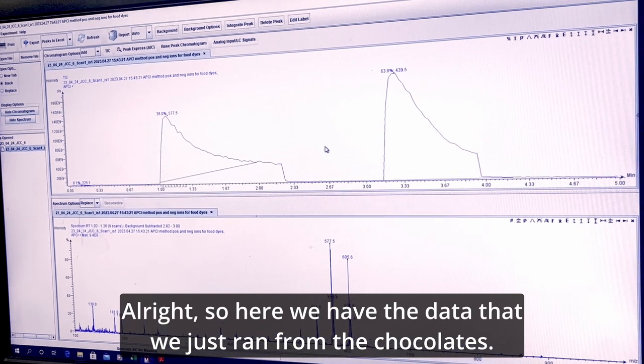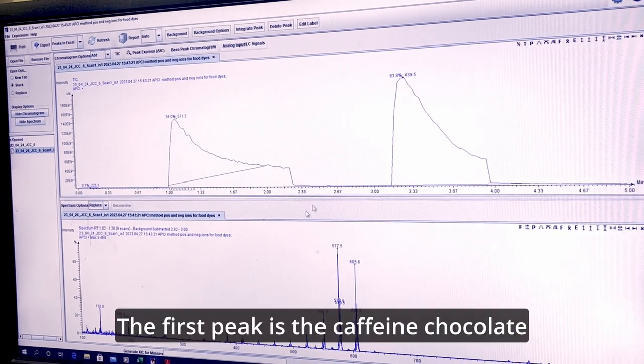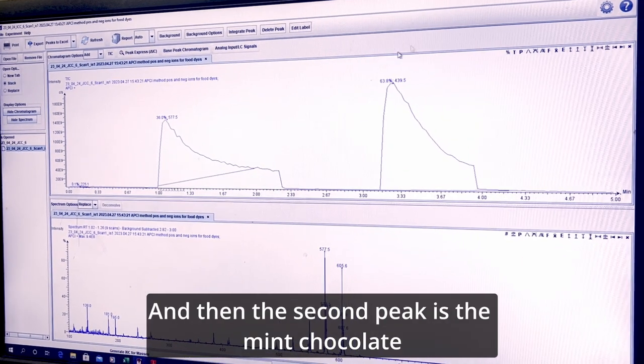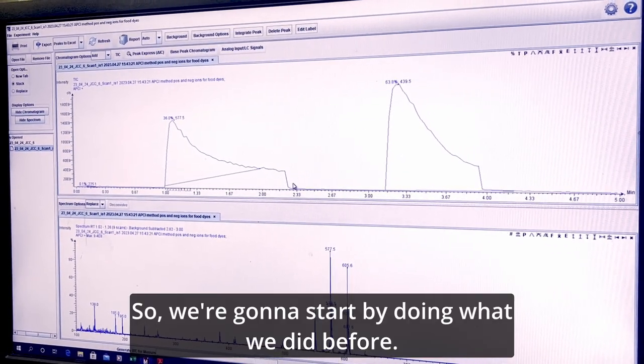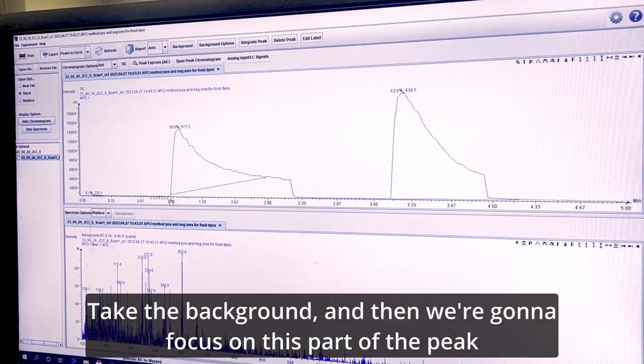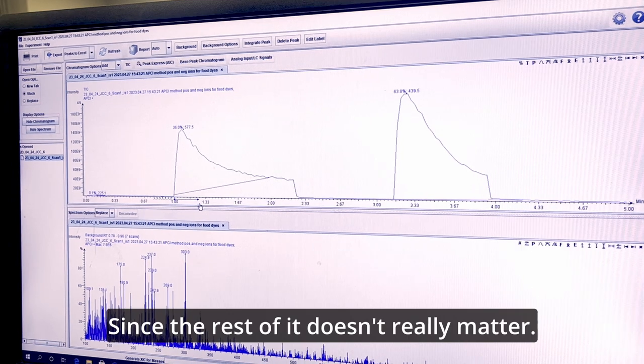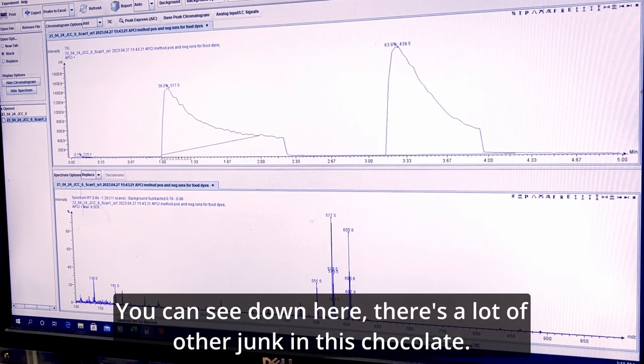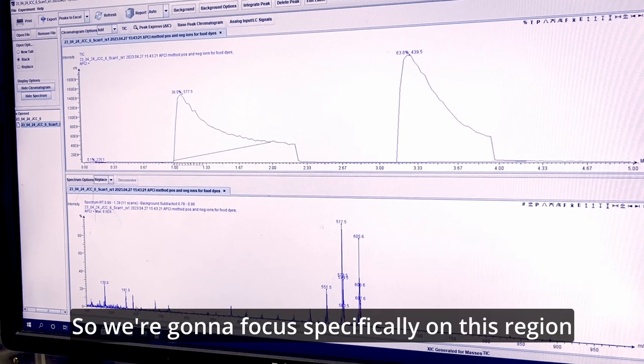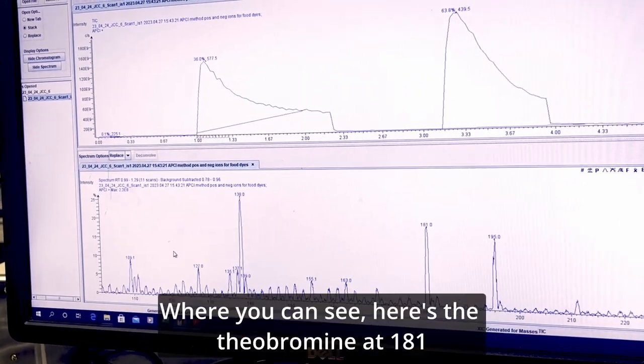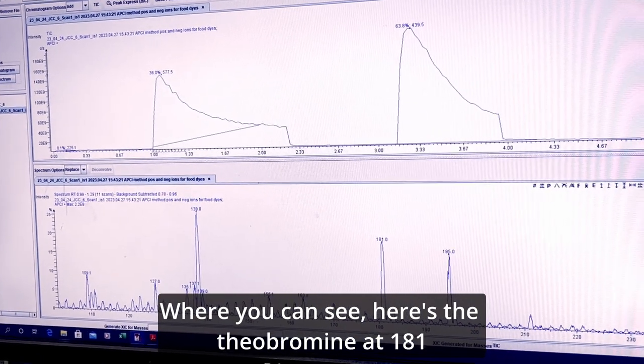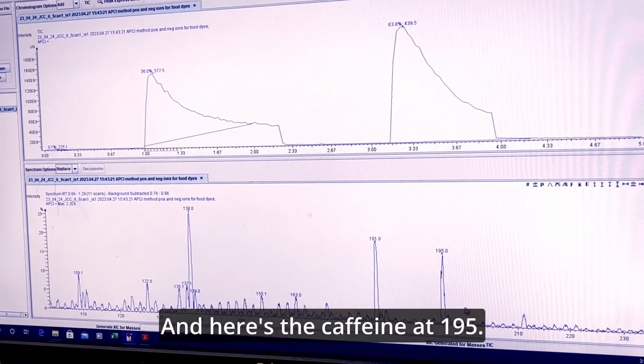All right. So here we have the data that we just ran from the chocolates. The first peak is the caffeine chocolate, and then the second peak is the mint chocolate. So we're going to start by doing what we did before, take the background, and then we're going to focus on this part of the peak since the rest of it doesn't really matter. You can see down here there's a lot of other junk in this chocolate, so we're going to focus specifically on this region where you can see here's the theobromine at 181, and here's the caffeine at 195.